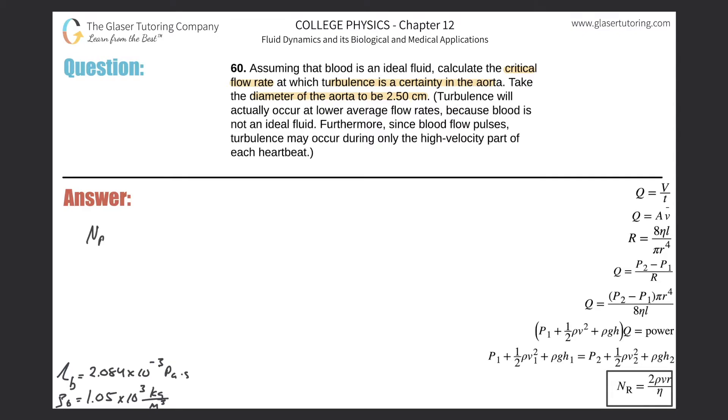The idea of the Reynolds number is the key relation. If the Reynolds number is larger than 3,000 approximately (this number changes based on textbooks), we assume it to be turbulent. If it's less than 2,000, we assume it to be laminar.